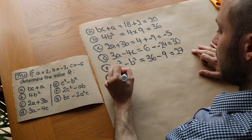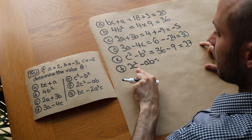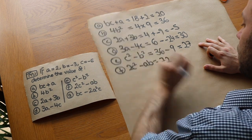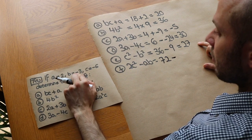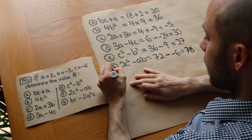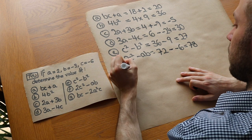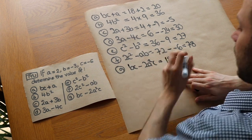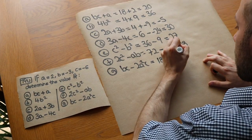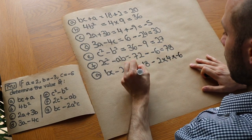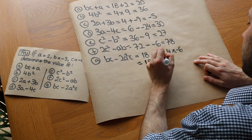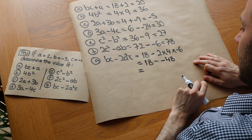We've got 2c squared minus ab. 2 lots of c squared: that's 2 lots of minus 6 squared, which is 2 lots of 36, giving 72. Then minus ab: a times b is 2 times minus 3, which is minus 6. 72 minus negative 6 gives 72 plus 6, which is 78. And finally the super difficult one: bc minus 2a squared c. bc is minus 3 times minus 6, positive 18, minus 2 times a squared — a squared is 4, times 2 is 8 — then 8 times c, which is minus 6, gives minus 48. So it becomes 18 plus 48, which is 66.